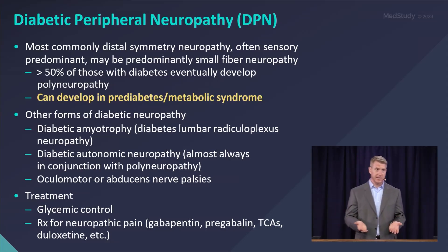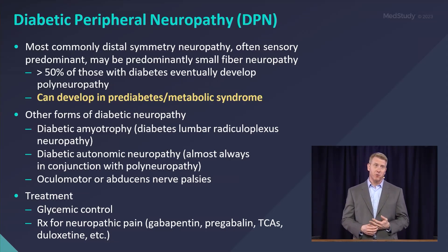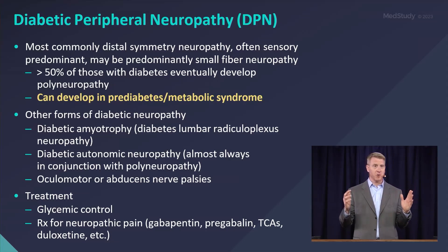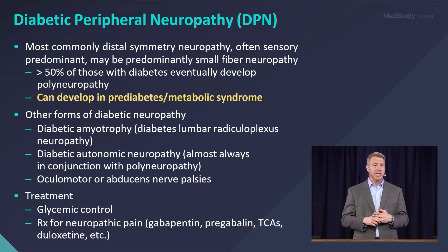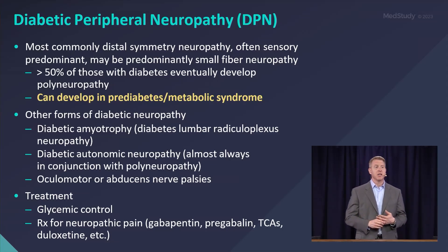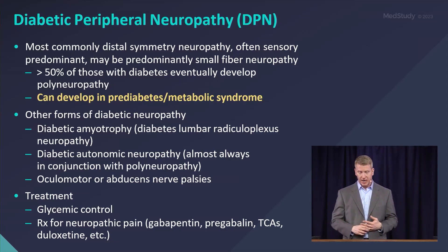Treatment, of course, is glycemic control. It's very rare, but you can also get a treatment-induced neuropathy. Patients that start with a hemoglobin A1c that's raging out of control — say 15% — and are rapidly lowered toward a more normal range over a couple of months, that can somehow unleash a neuropathy. It's rare, but it happens.